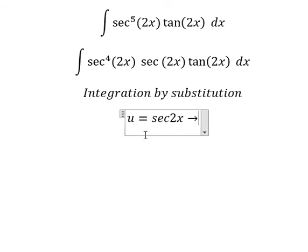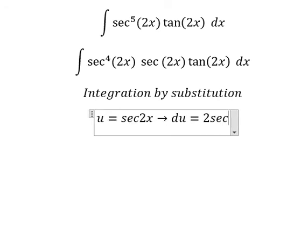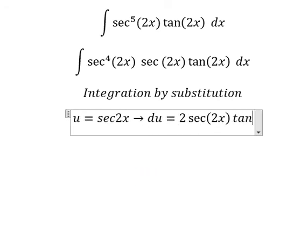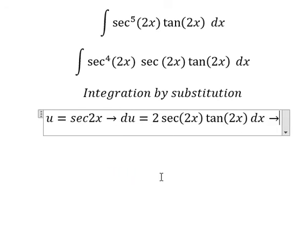Next, we take the first derivative of both sides and we have du = 2 sec(2x) tan(2x) dx. Because we don't have the 2 in our integral, we divide both sides by 2.